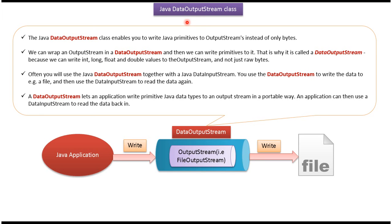In this video tutorial I will cover DataOutputStream. Here you can see the file and the Java application. A Java application can use DataOutputStream to write primitive data types to an output stream in a portable way. The output stream in turn writes data to a file. The output stream can be a FileOutputStream or BufferedOutputStream, etc.